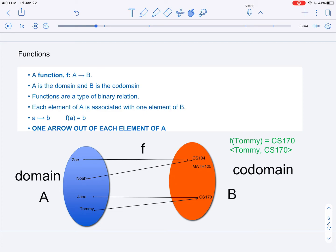What's special about functions is that you'll notice that in the binary relation for a function, every point in the domain, every element of A, must be in an ordered pair to a point in the codomain.